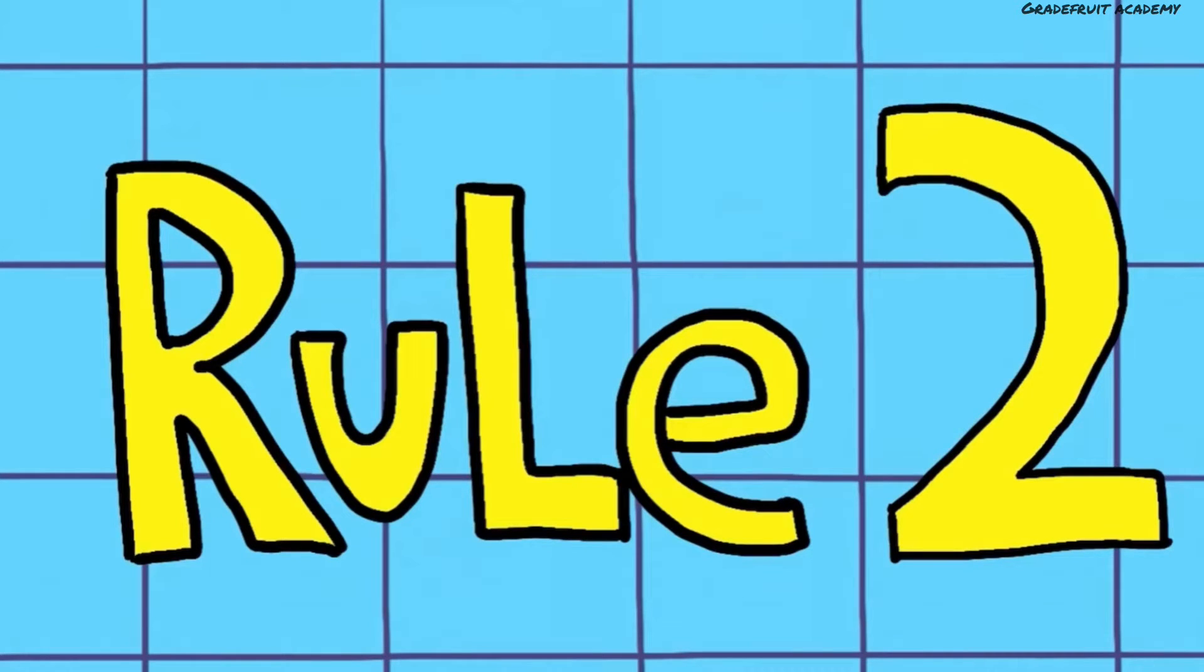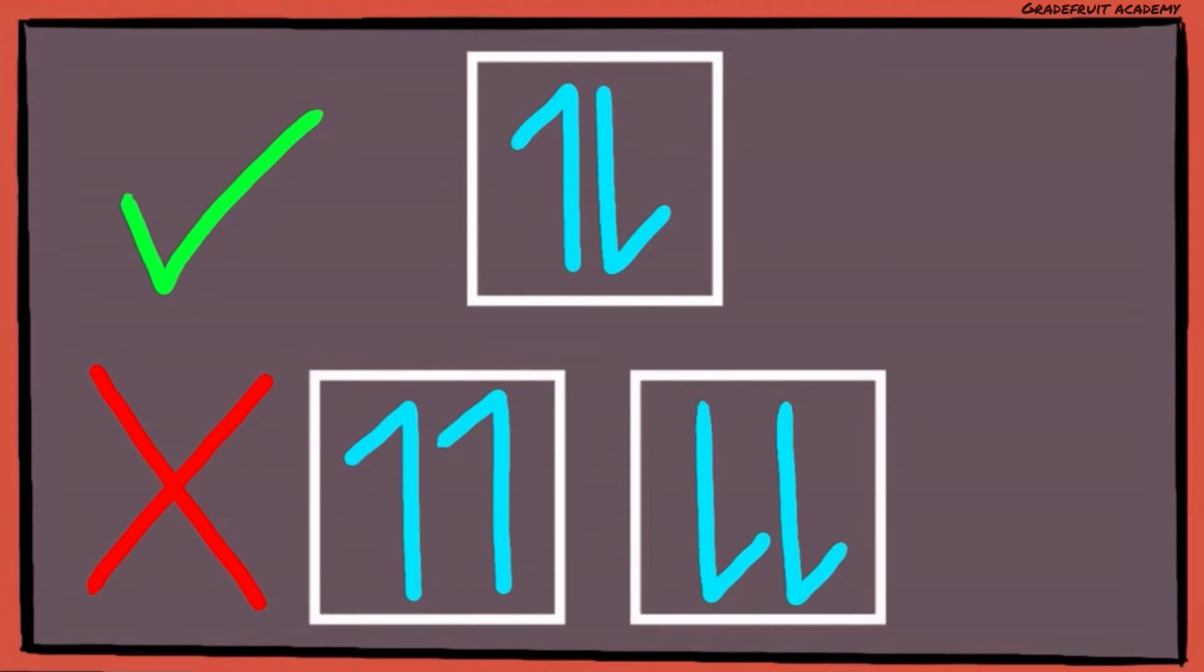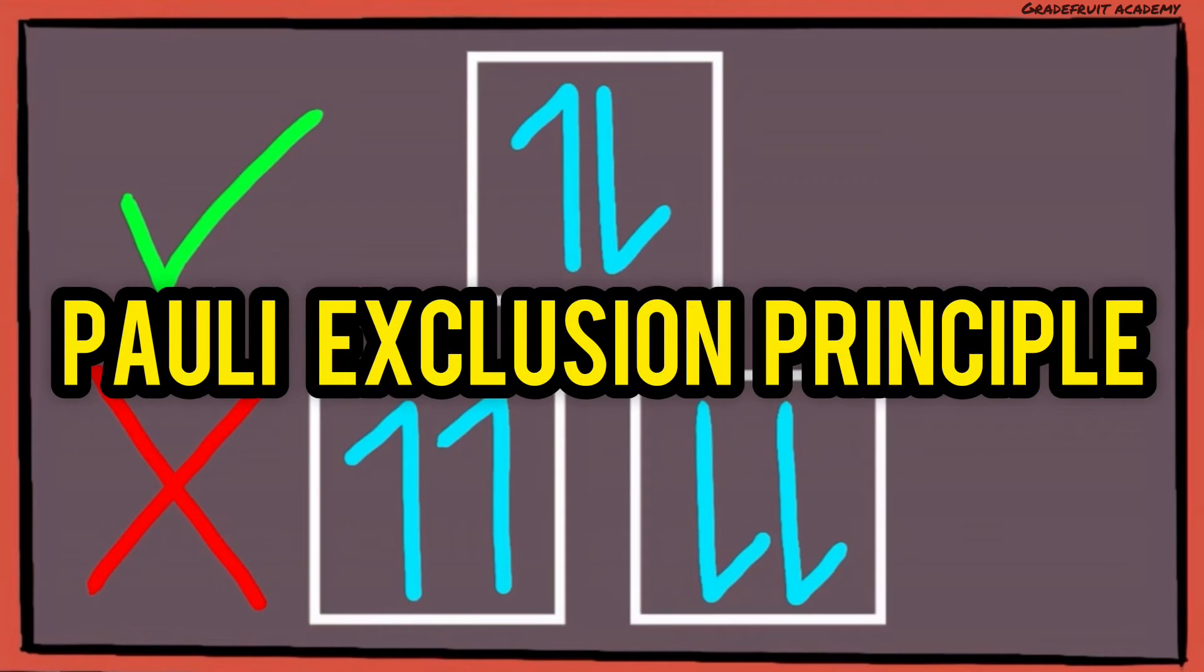And just like what you've seen earlier, the second rule is that the half arrow electrons must be of opposite spins and cannot be facing the same way. This is also known as the Pauli exclusion principle.